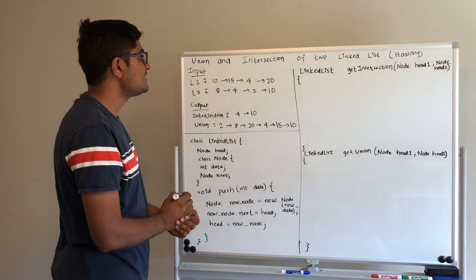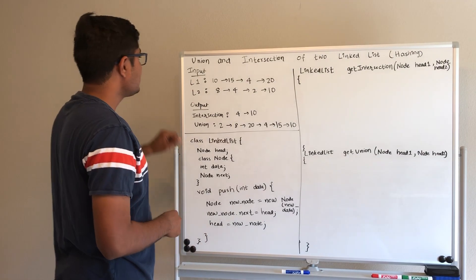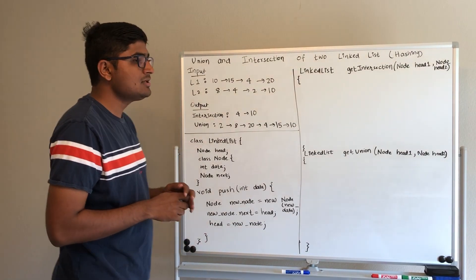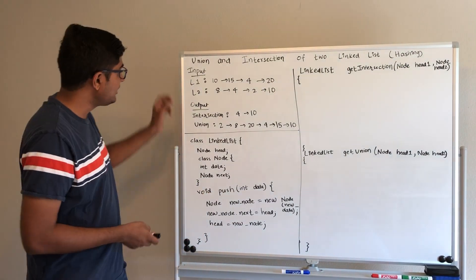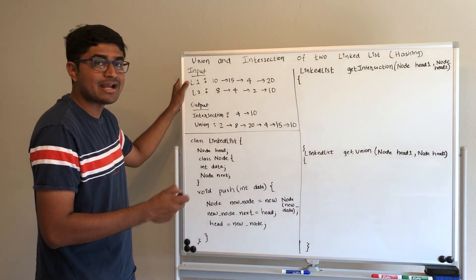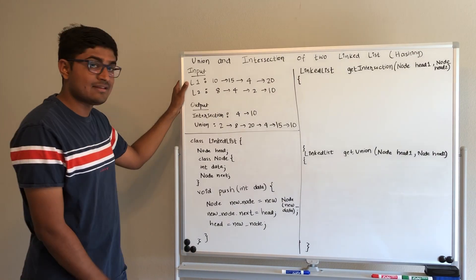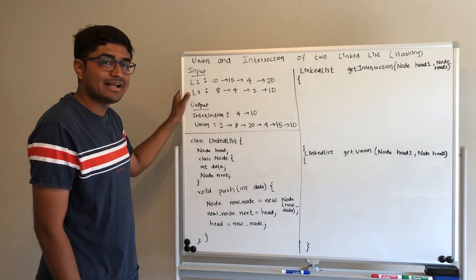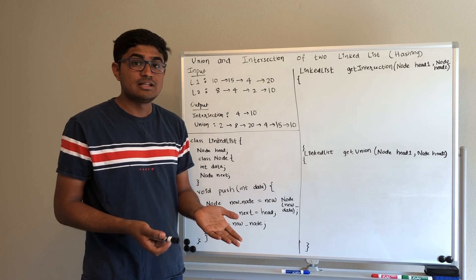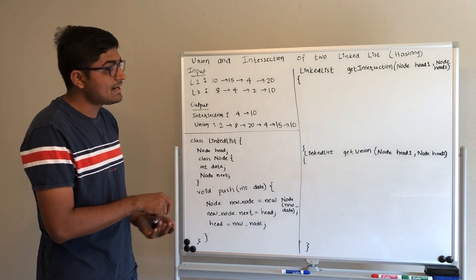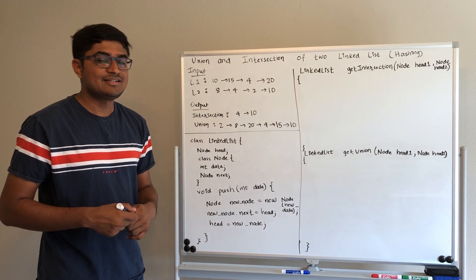For the intersection of two linked lists, the idea is to create a hash set, iterate over the first list and add all its elements to the hash set, then iterate over the second list and check if any elements are common in the hash set. If they are, add them to the resultant list and return it at the end.